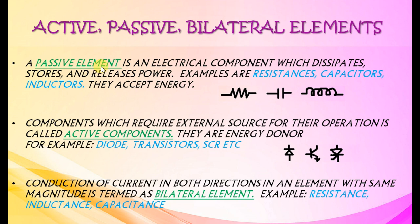Active, passive, and bilateral elements. A passive element is an electrical component which dissipates, stores, and releases power. Examples are resistances, capacitors, and inductors — they accept energy. Components which require an external source for their operation are called active components — they are energy donors. Examples are diode, transistors, and SCR.